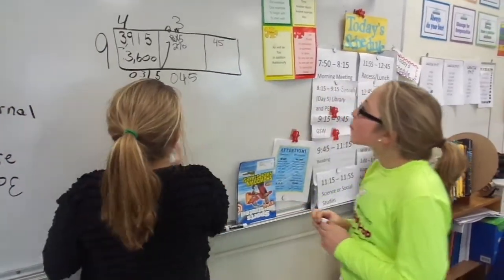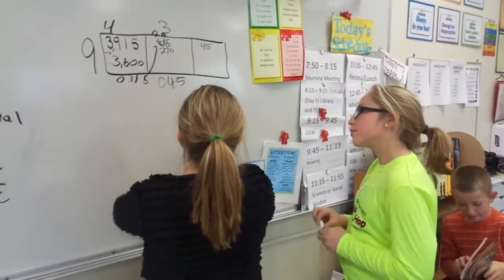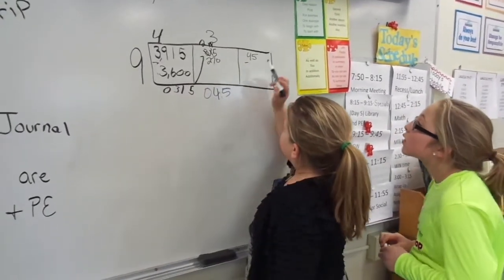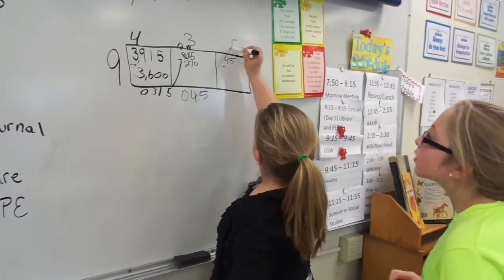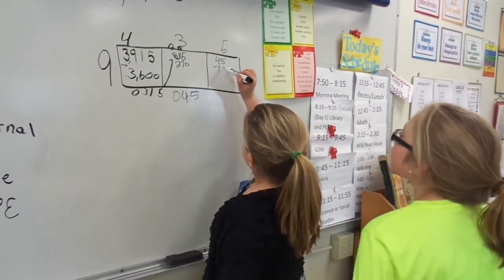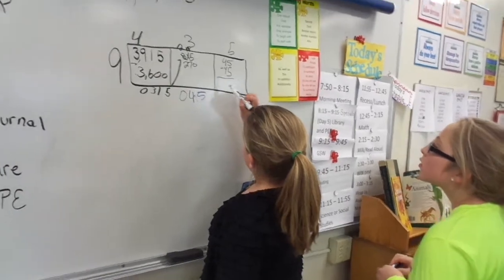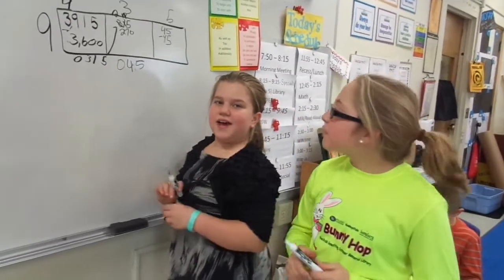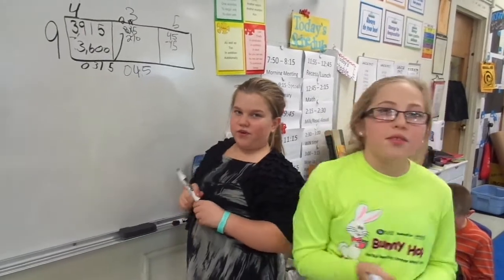Excellent. And then we would do 45, it would be 5 up here. So we do 45 minus 45. Why did you get a 5 up top? You're right. Why? Because 5 times 9 is 45. Good.